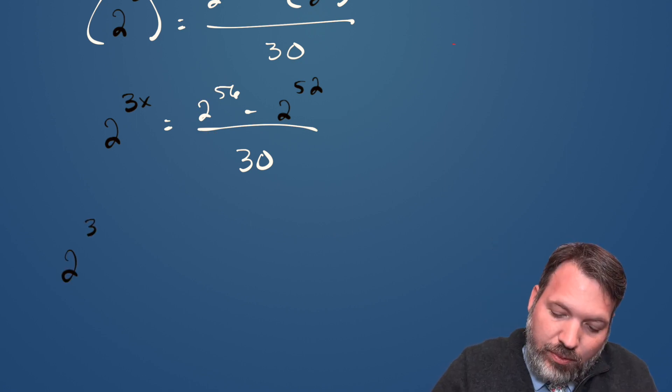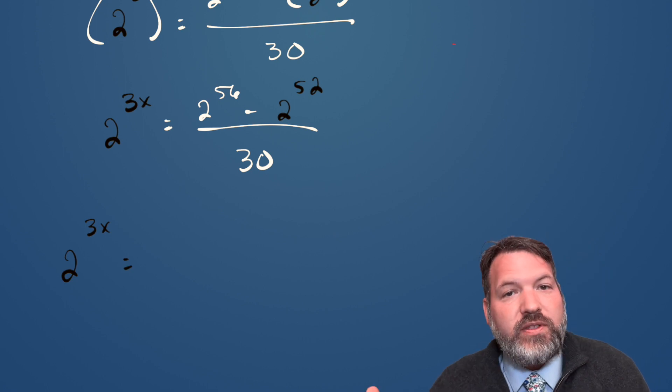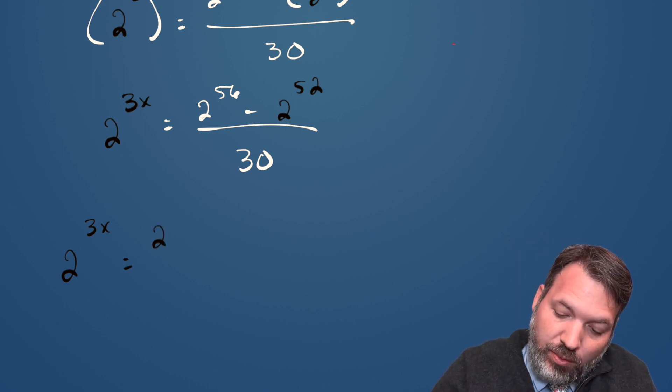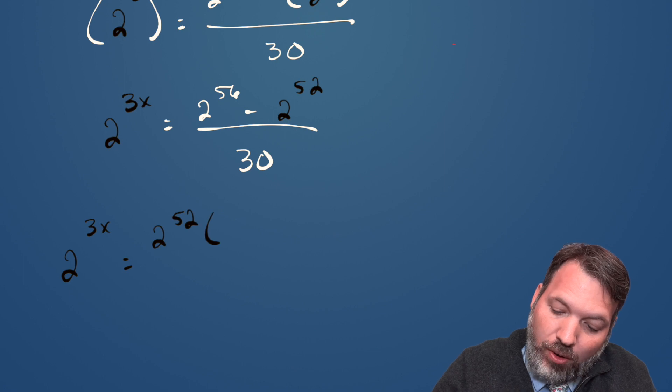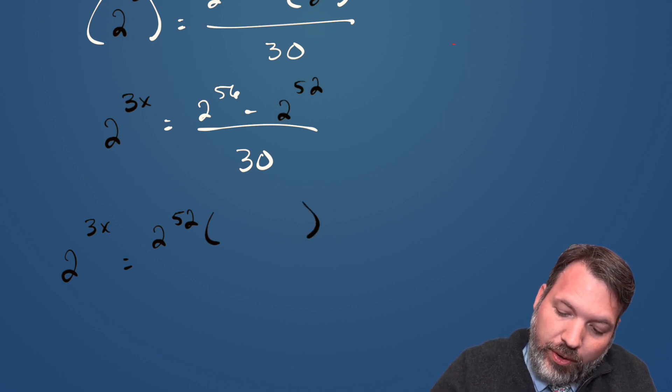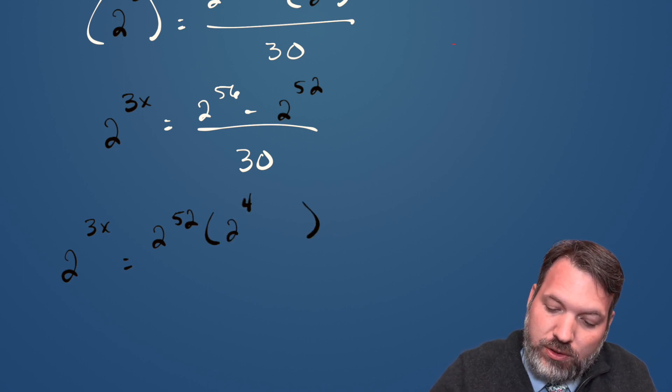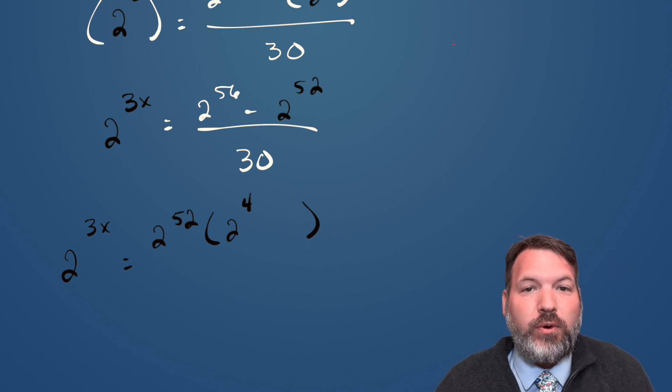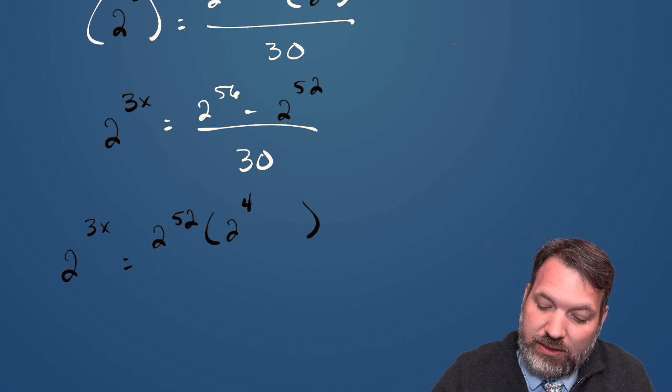So on this left side, we're not going to do anything for now. We're just going to leave that as 2 to the 3x power. But on this right side, we're now going to factor out 2 to the 52nd, which is going to leave a 2 to the 4th. 2 to the 52nd times 2 to the 4th is how we get 2 to the 56th.